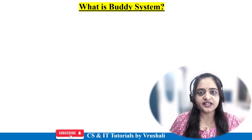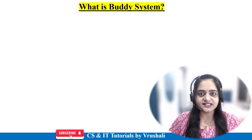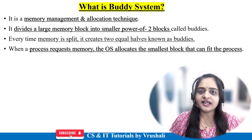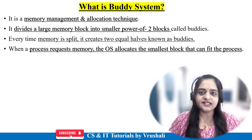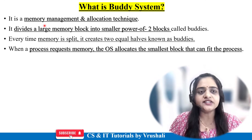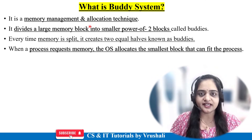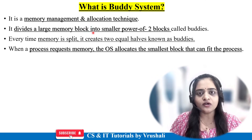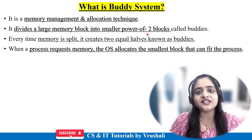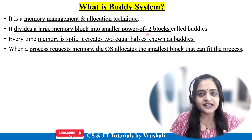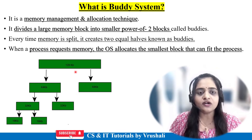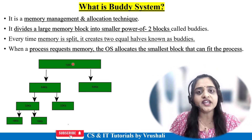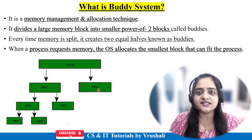The first question is: what exactly is the Buddy System in operating systems? As we discussed earlier, in an operating system there are multiple processes. Every process requires memory for execution. So the Buddy System is one of the memory management and allocation techniques. It divides a large memory block into smaller equal parts as per the power of 2. Suppose the operating system has one memory block of 128 KB — the Buddy System divides this block